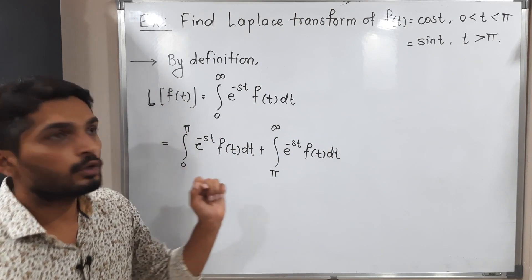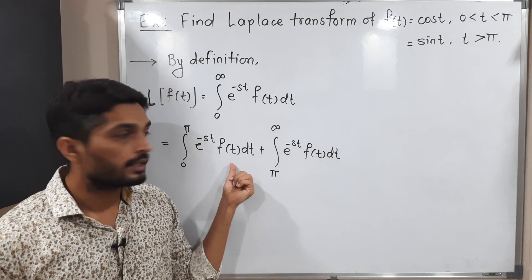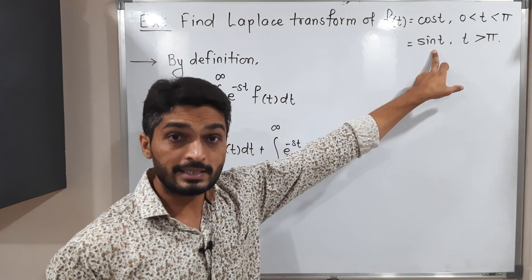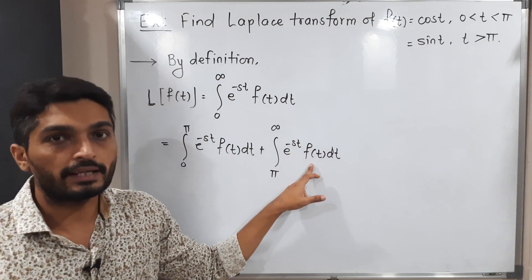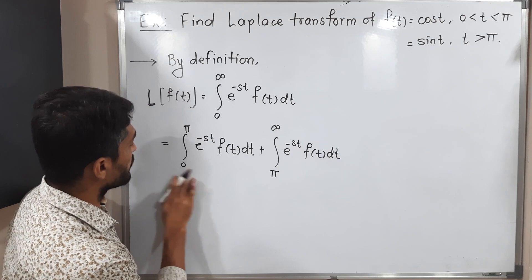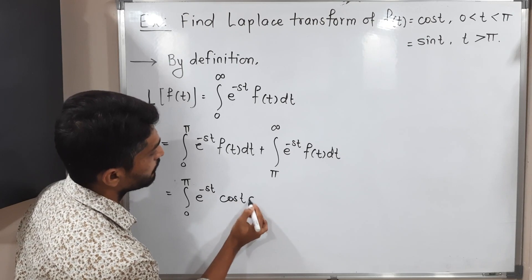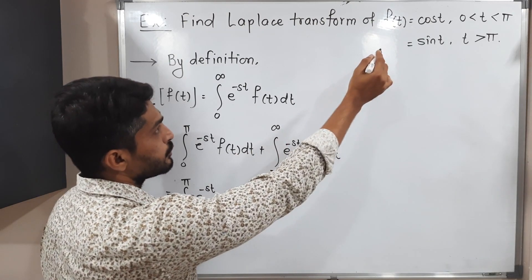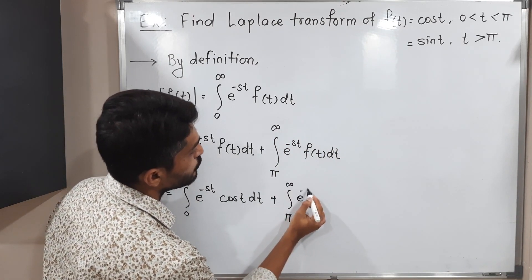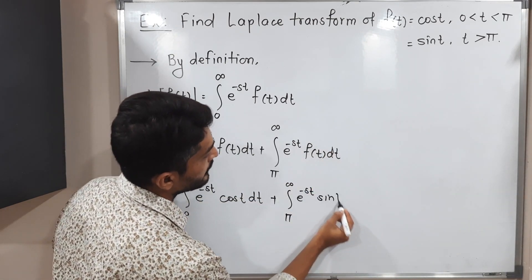For zero to π, the value of f(t) is cos(t), so at the place of f(t) we put cos(t). For π to infinity, that means t greater than π, the value of f(t) is sin(t). So this becomes: integration from zero to π of e^(-st) cos(t) dt, plus integration from π to infinity of e^(-st) sin(t) dt.